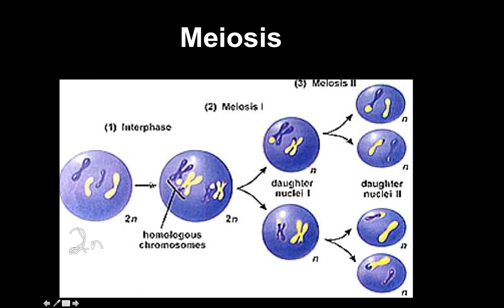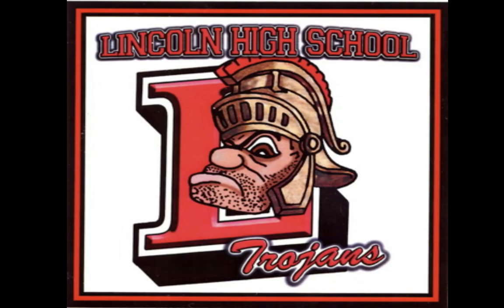In summary: meiosis starts with a diploid cell, the DNA replicates, then we have a first division leaving haploid cells, then a second division — leaving four haploid gametes, all still 1n. Remember PMAT: prophase, metaphase, anaphase, telophase. And that's the basics of meiosis.